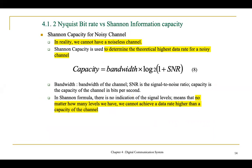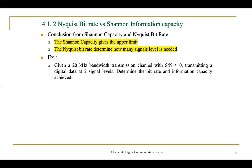Shannon capacity is used to determine the theoretical highest data rate for a noisy channel, since in real life no system is noiseless. The formula is C equals B multiplied by log₂(1 plus signal-to-noise ratio). In the Shannon formula there is no indication of signal levels — no M — meaning no matter how many levels we have, we cannot achieve a data rate higher than the channel capacity. The conclusion is that Shannon capacity gives the upper limit, while the Nyquist bit rate determines how many signal levels are needed.